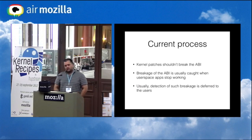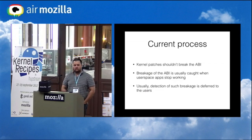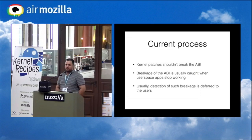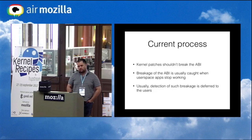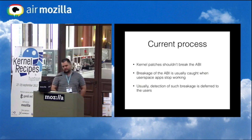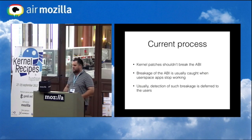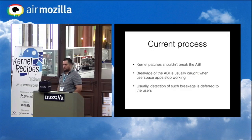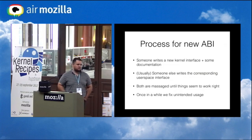I'll cover how the current process works for getting a new ABI and what the requirements are for existing ABI changes. As Greg stated yesterday, we can't break the ABI — it's the one thing you'll get yelled at for, and no patch is allowed to break the ABI intentionally. The problem is we don't have enough tools in place to catch this breakage in time, so usually the one to complain is the user who's supposed to have a working system.